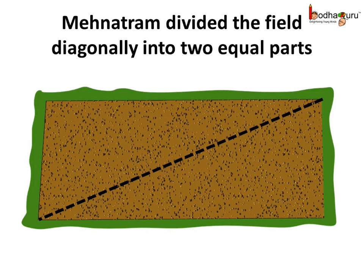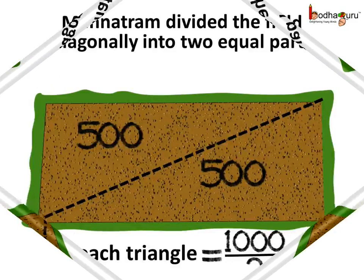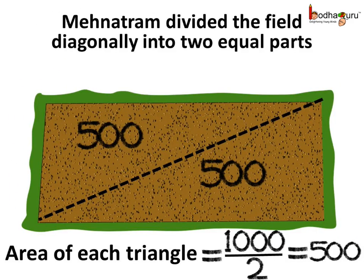Now what would be the area of each triangle? Well it's simple to calculate. It is half of the whole rectangle, that is 1000 divided by 2, which is equal to 500 square meters.